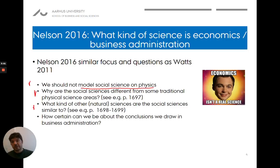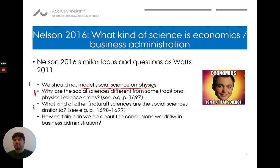Nelson also points out there are actually a range of natural sciences that aren't like physics. If we have the classical physics expectation of precise prediction, then biology and meteorology aren't cutting it either — they're not as clear as physics. So he wants us to think about how certain we can be about the conclusions we draw on business administration, why there is sometimes uncertainty, and why that is okay.